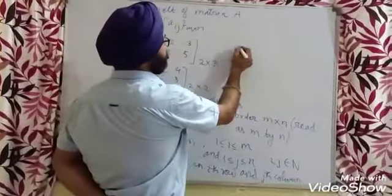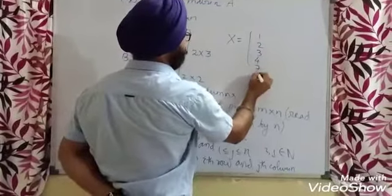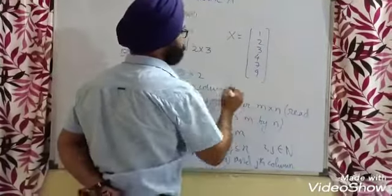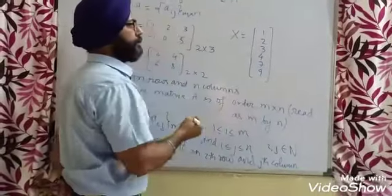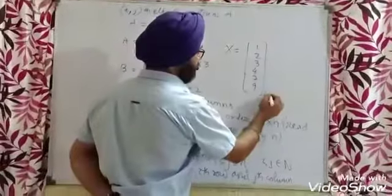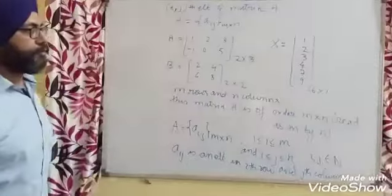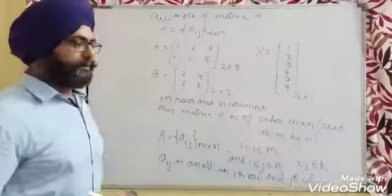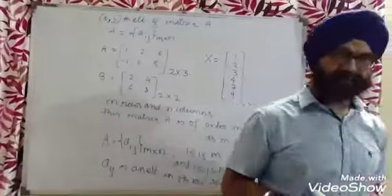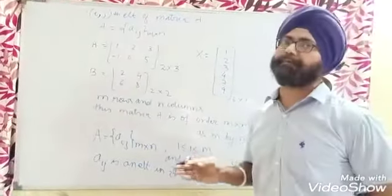Similarly, if we take one more example — suppose entries 1, 2, 3, 4, 7, 9 — in this matrix there is only one column and six rows, so we write the order as 6 by 1. We have discussed some basic examples related to order and elements of a matrix.